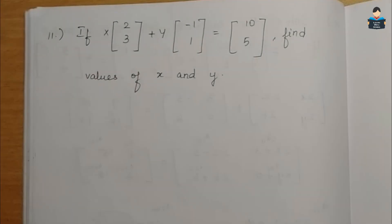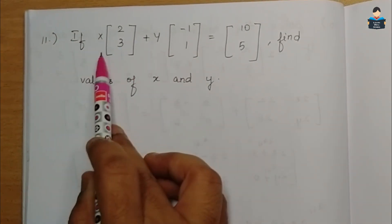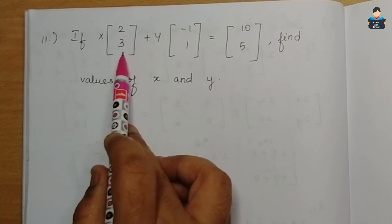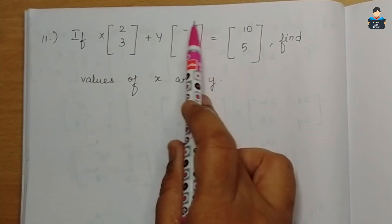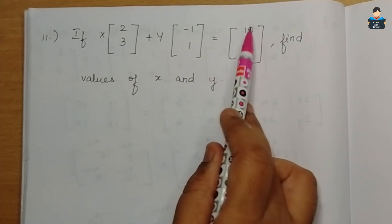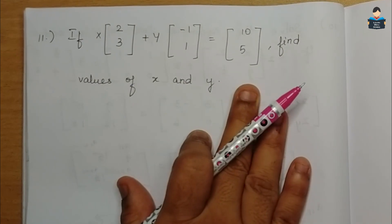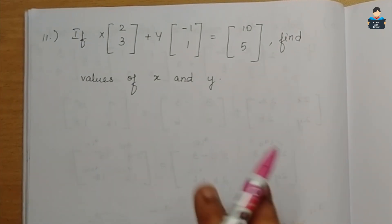Hello everyone, welcome to our channel. In this video, 12th standard NCERT Maths Chapter 3 Matrices, Exercise 3.2, Question number 11. We have f(x) as a 2x1 matrix equal to [10, 5].